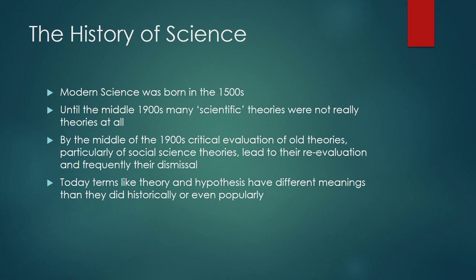By the middle of the 1900s, say about 1950, a lot of these old theories are being re-examined, particularly the social science theories. They're being re-evaluated and very frequently they're really being dismissed. So one of the things I'd like to focus on in this lecture is the difference between theory and hypothesis, because they have different meanings than they did historically, or even how they're used popularly in the United States.